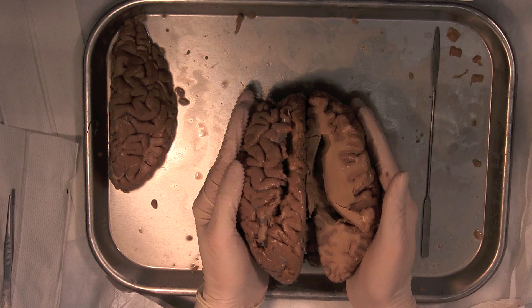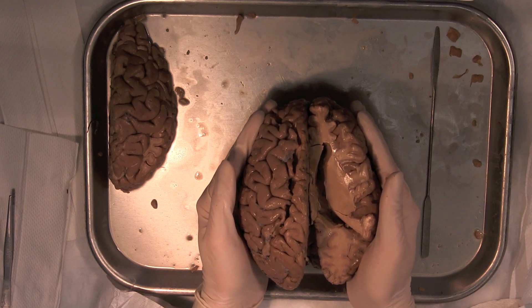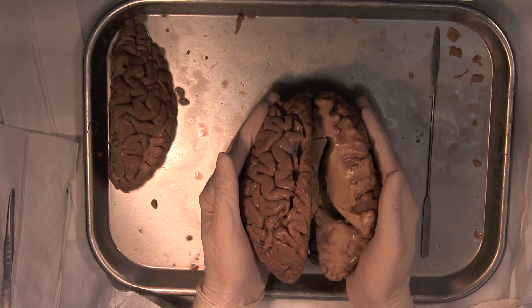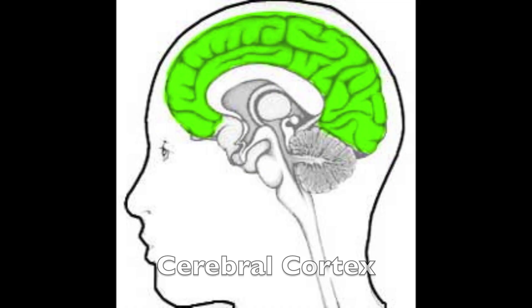For this video, let's return to the telencephalon, or cerebrum, and check out some other important brain structures. The cerebrum is made up of three sub-regions: the cerebral cortex, which we just went over — that's all that gray matter in the four lobes.